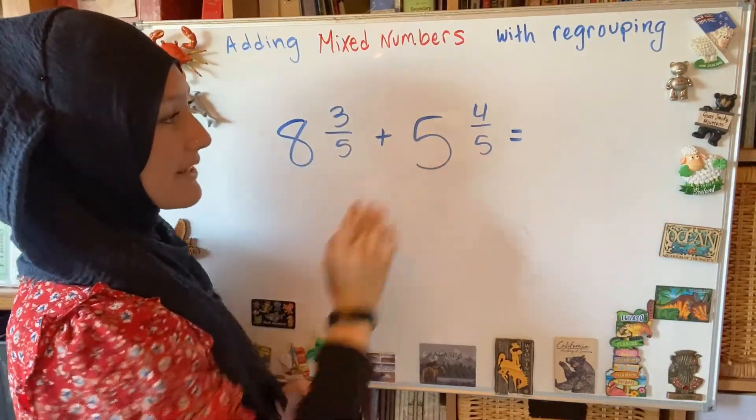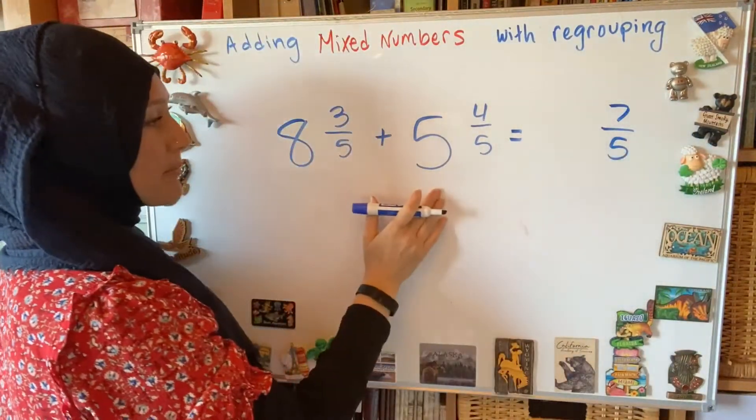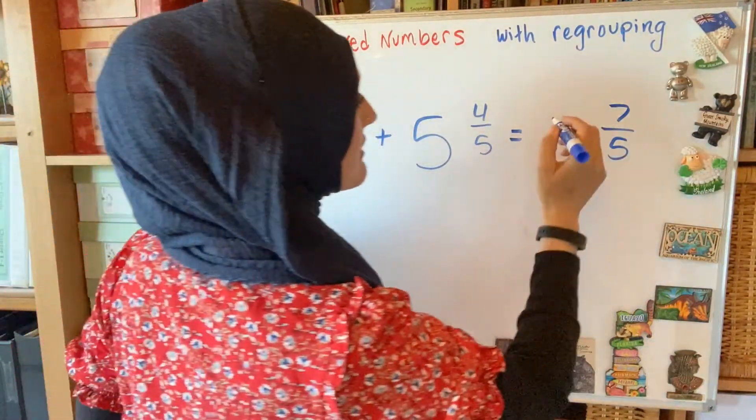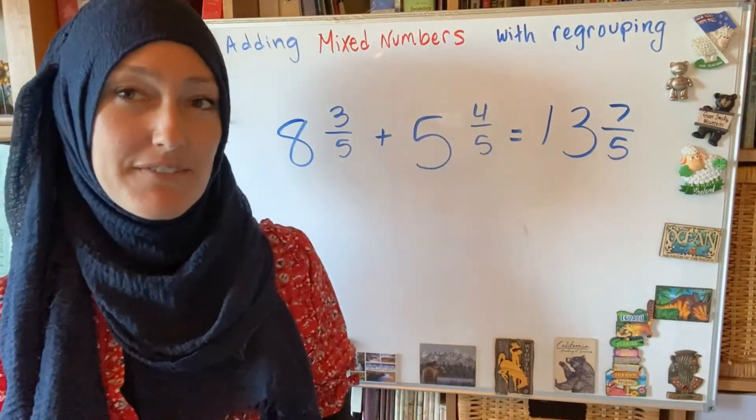So if I add those together, I will have 7 fifths. And then my whole numbers, 8 plus 5, is 13. So now I have 13 and 7 fifths.